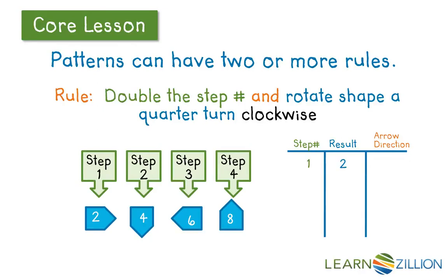Step 1, we've doubled, we have the 2, and I show the arrow direction to the right. Step 2, it's doubled, becomes a 4, arrow points down. Step 3, the number is a 6, arrows to the left. Step 4, double the 4, becomes an 8, arrow points up. Step 5, I double the 5, that's a 10. My arrow points to the right.